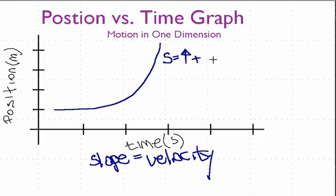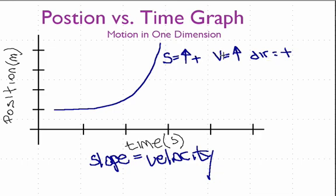What does that tell us about the velocity? That means, therefore, that the velocity is increasing, and the velocity is positive, so that tells us that it's going in the positive direction. So slope equals velocity — the sign of the velocity tells us the direction.